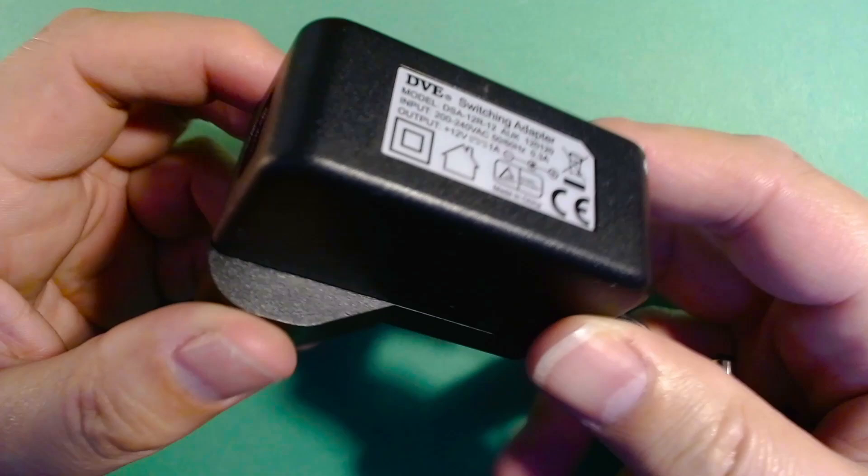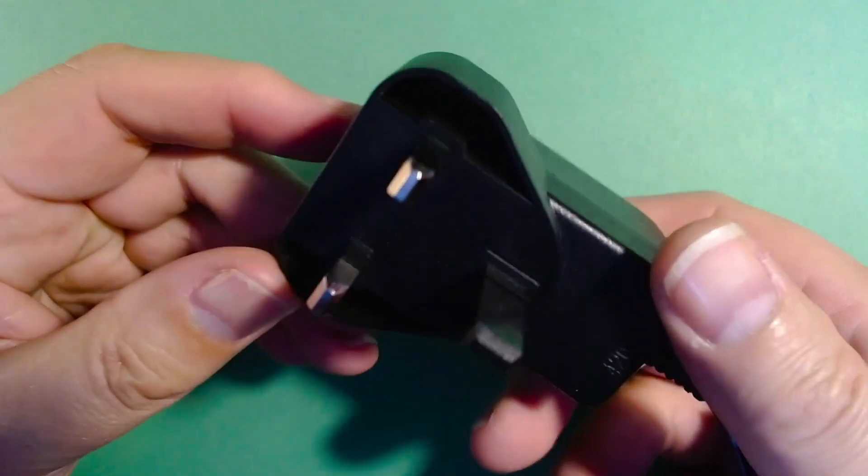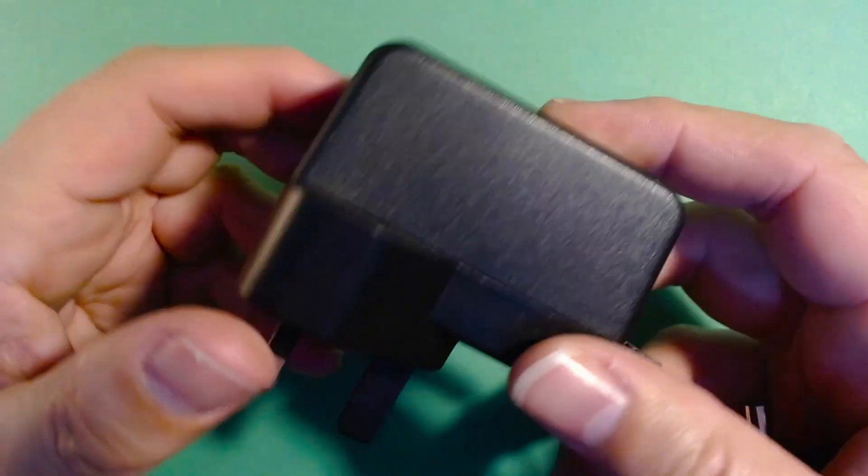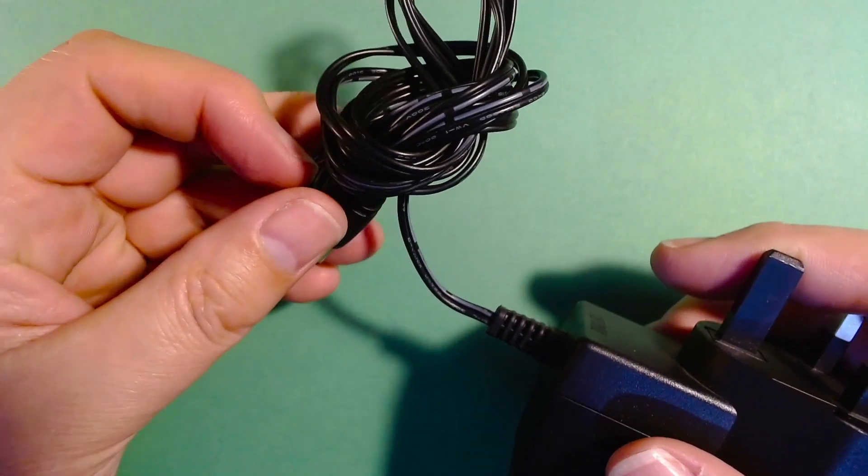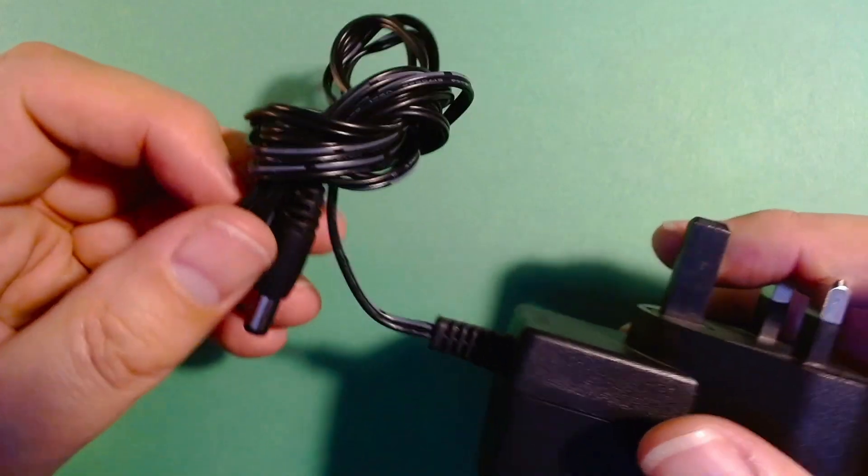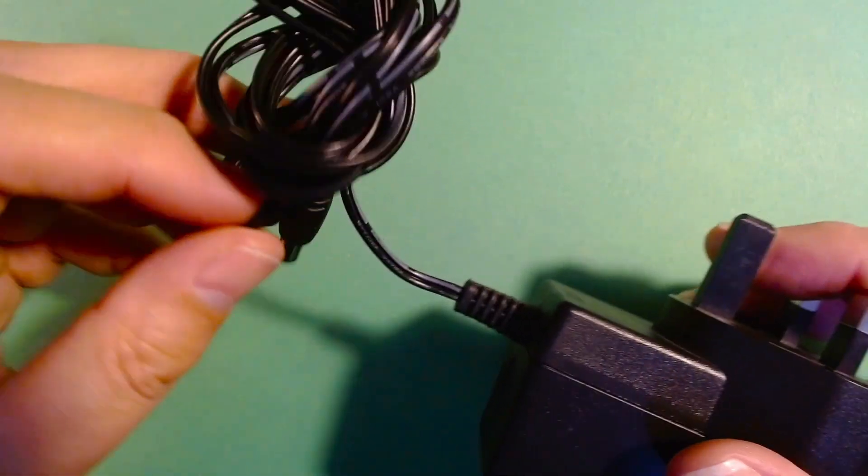And then secondly, you'll need an old 9 or 12-volt AC to DC power adapter, the kind that you plug into the wall. We're going to use the wire and the jack plug from this. You only need this part though if you want to put a plug on your connector for powering devices like Arduinos. If you're just doing a repair, then you only need the battery connector and maybe some wire.